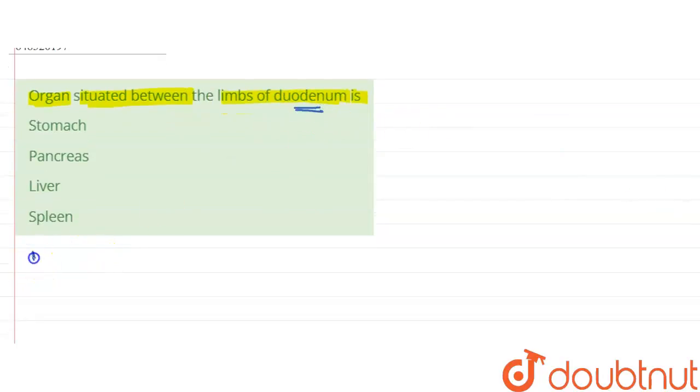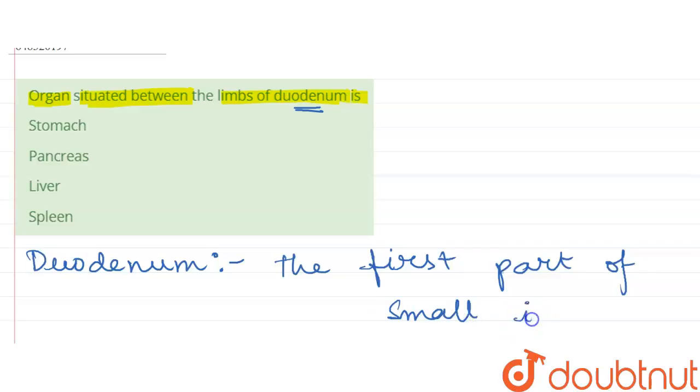Duodenum: basically, it is the first part of our small intestine, the first part of small intestine.